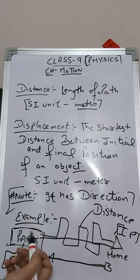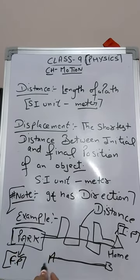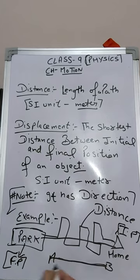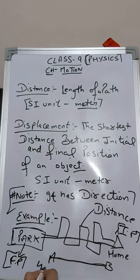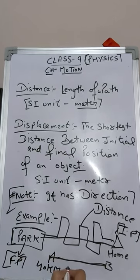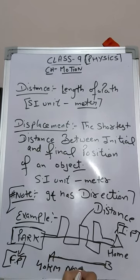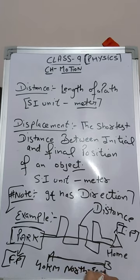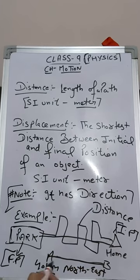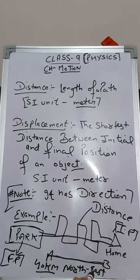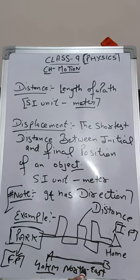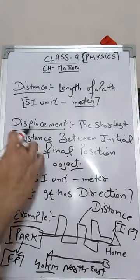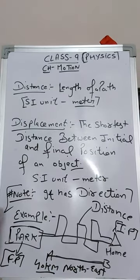Consider another example: you have moved 40 kilometers in the North-East direction. Here we include both distance and direction. Distance combined with direction is called displacement.